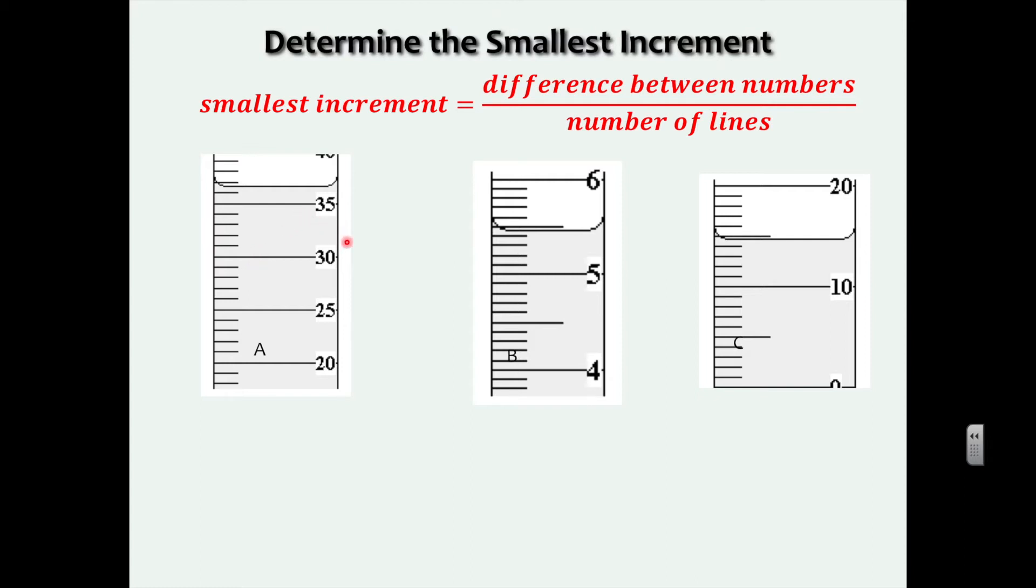And the number of lines is going to be 1, 2, 3, 4, 5. So 5 divided by 5 is 1.